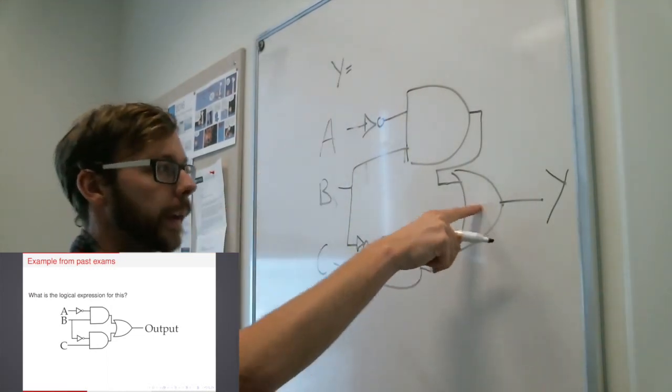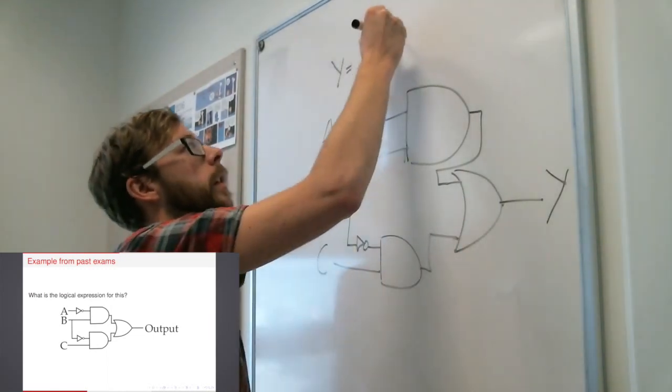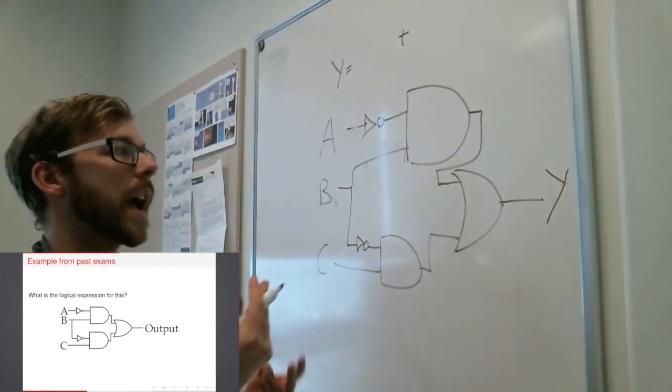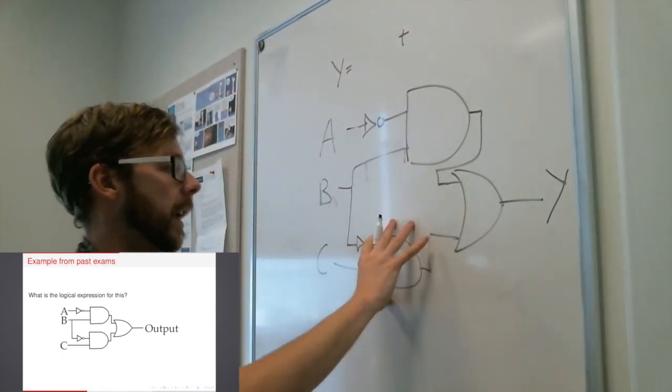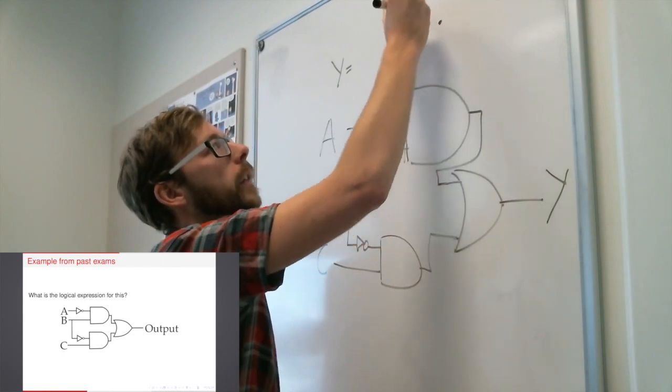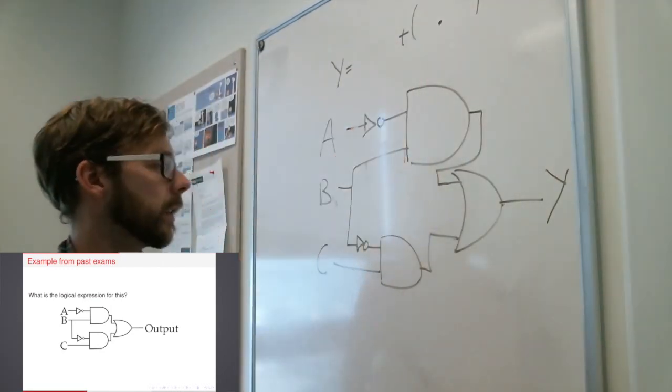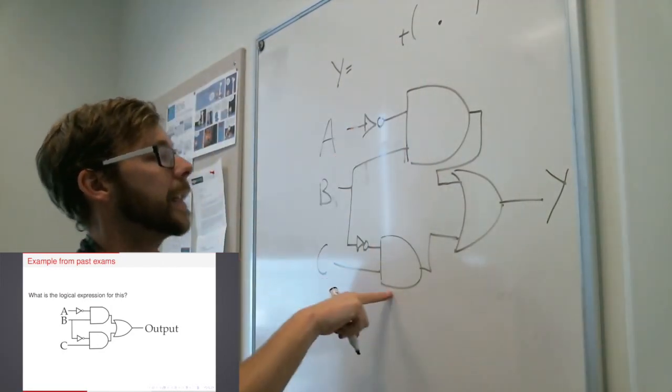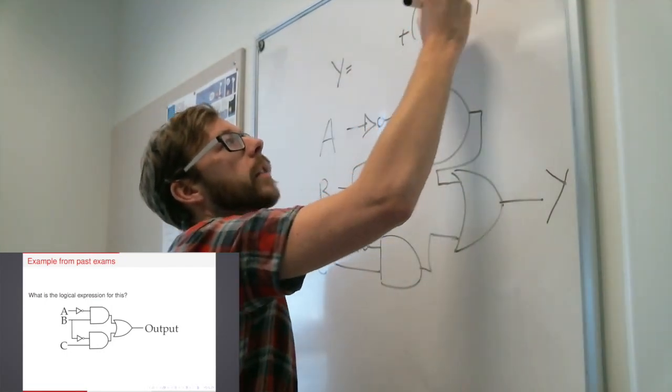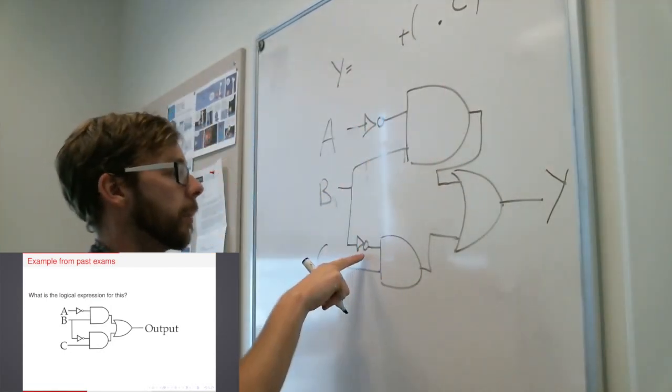So let's do my trick one more time. And to give me some room, I'm going to write the output up here this time. So my output, again, the last gate is an OR. So I write my OR like that. And now I'm going to start with this AND gate here. So I've got an AND gate down the bottom.